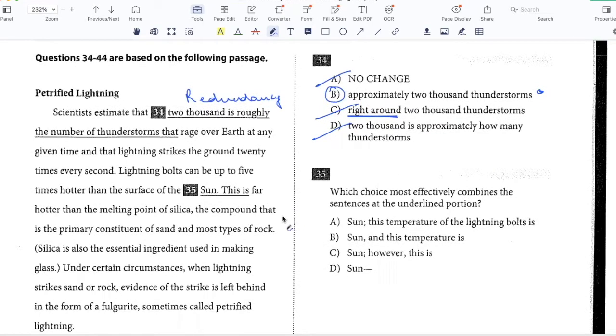Lightning bolts can be up to five times hotter than the surface of the sun. This is far hotter than the melting point of silica, the compound that is the primary constituent of sand in most types of rock. Which choice most effectively combines the sentences at the underlying portion? So I need to say that lightning bolts can be up to five times hotter than the surface of the sun and then far hotter than the melting point of silica. So D which looks like the most concise option is actually a good way to put this because if I'm saying that lightning bolts are up to five times hotter than the surface of the sun dash far hotter than the melting point of silica then that makes sense and it's a continuous sentence so I like D.